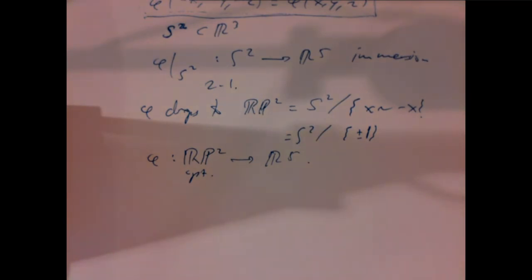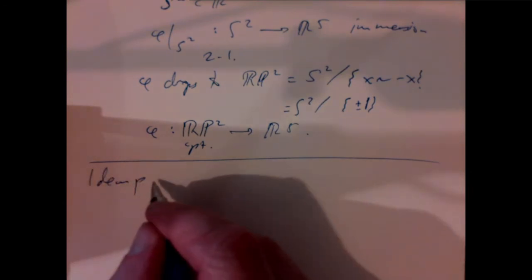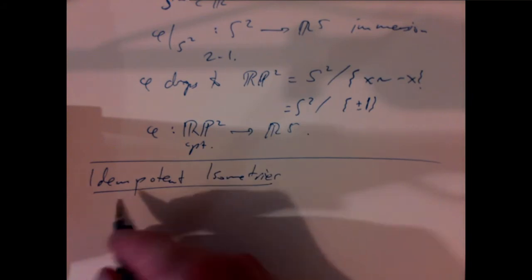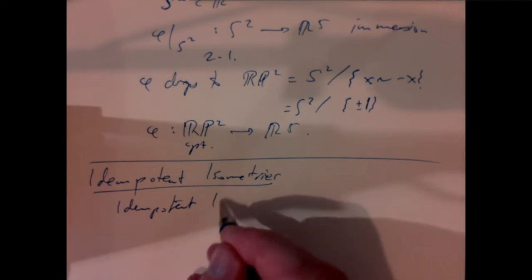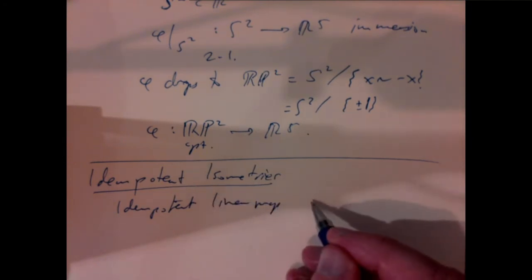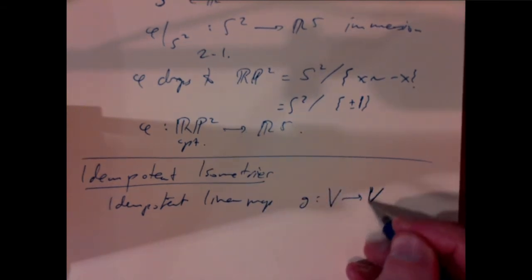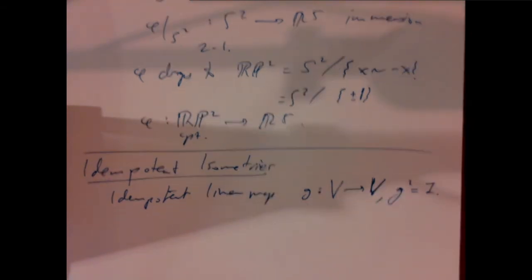Now we want to relate examples in differential geometry to linear algebra. We're going to try to understand idempotent isometries and use them to embed the Grassmannian. An idempotent linear map G on a vector space satisfies G∘G = identity. It's not hard to prove using linear algebra that such a map has eigenvalues splitting into two eigenspaces: a +1 eigenspace and a −1 eigenspace, and the vector space splits as a direct sum of those two eigenspaces.